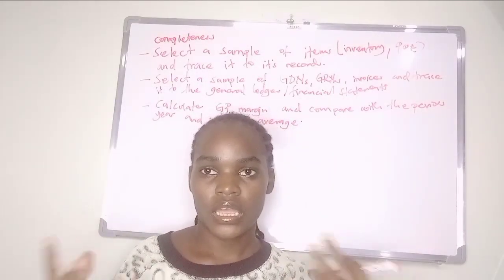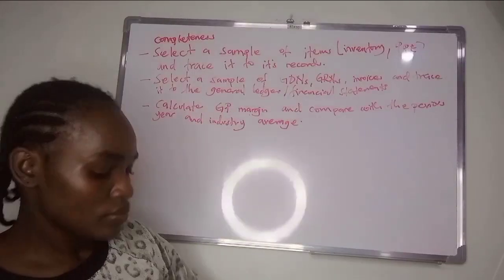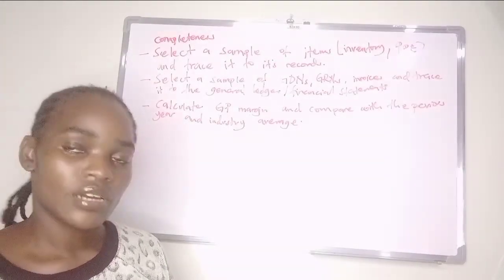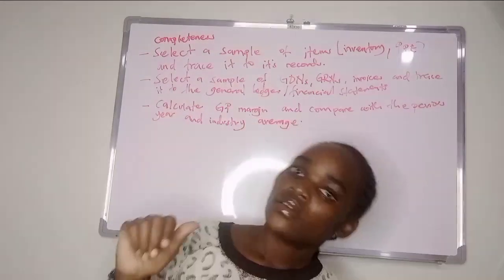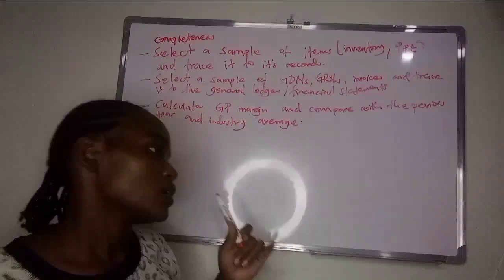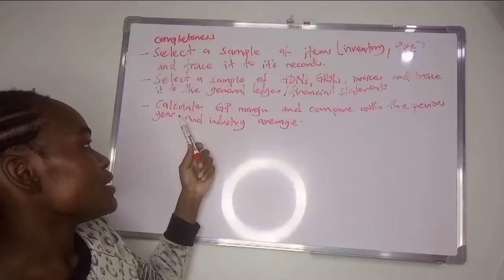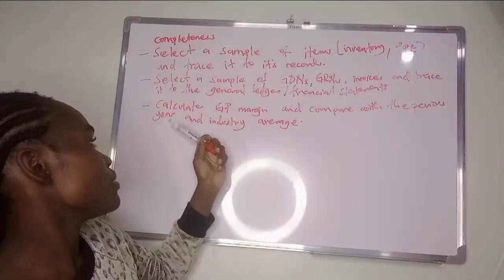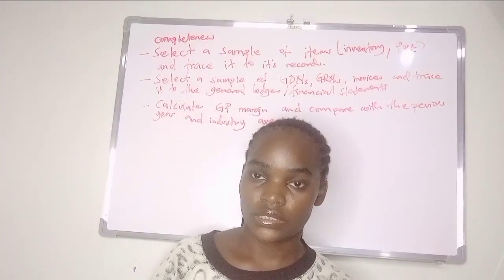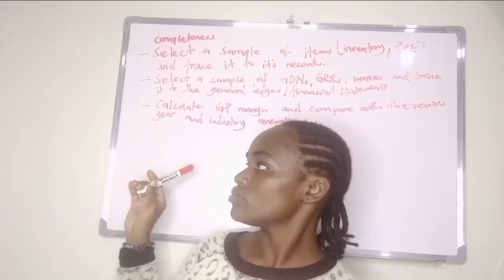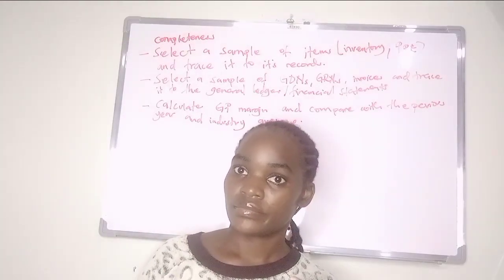The statement is the same — you just keep twisting. When it comes to things like sales, purchases, and inventory, you can also calculate gross profit margin and compare it with the previous year and then the industry average to confirm completeness.